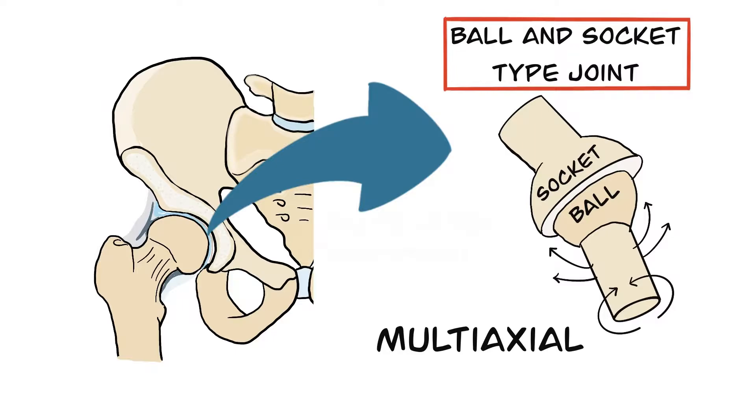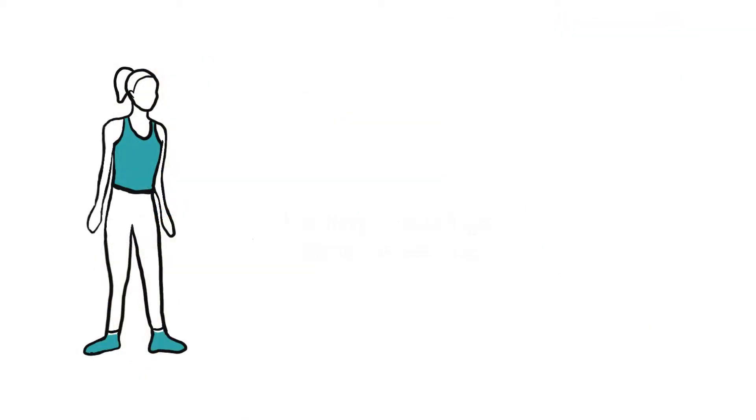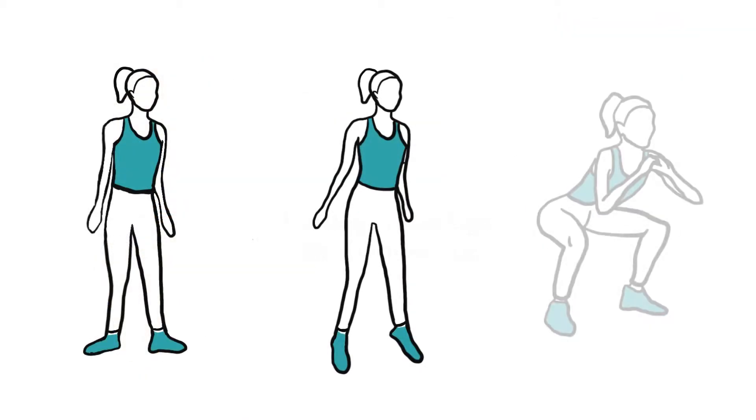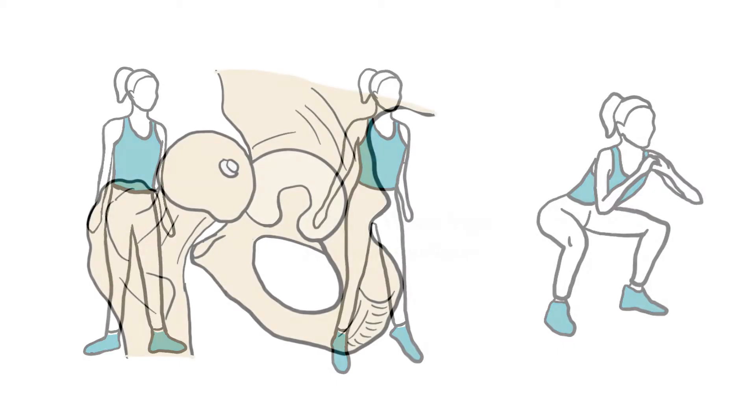Thanks to deep insertion of the head of the femur into the acetabulum, the hip joint is a highly stabilized joint. So the hip joint allows the person to perform many movements such as standing, jumping, walking, and squatting. Because the hip joint is directly related to walking, pathologies that occur here directly affect walking.